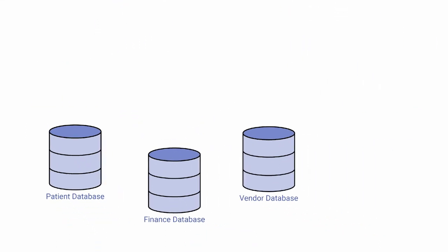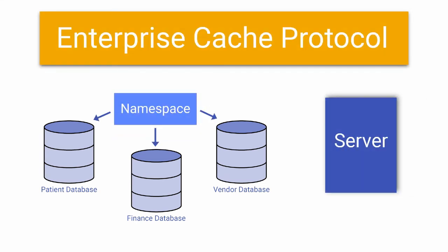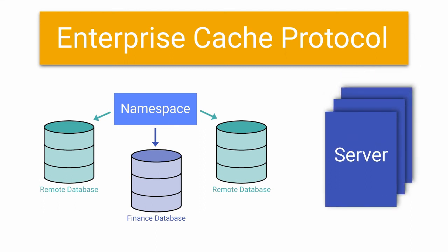Additionally, Cache implements a protocol called ECP, Enterprise Cache Protocol, that allows namespaces to reference databases residing on remote servers. This allows for additional scalability by spreading out the work of retrieving data and running application code across multiple sets of hardware.